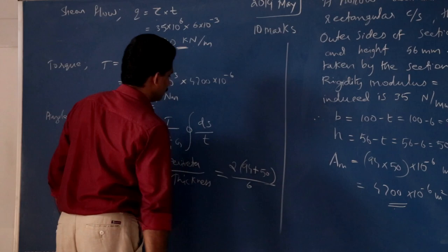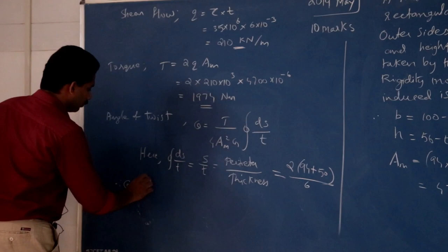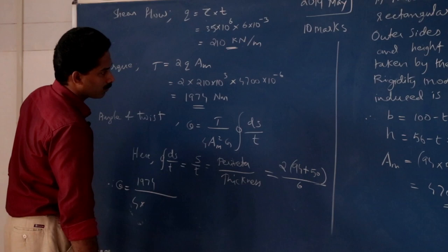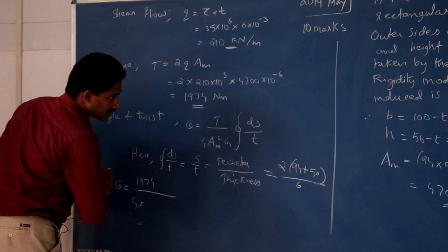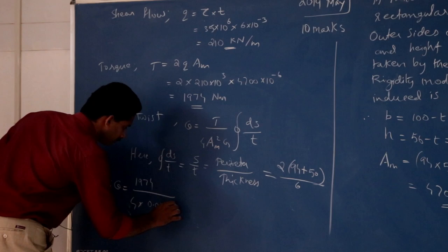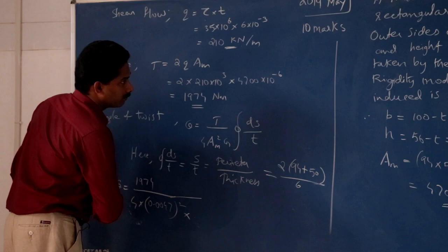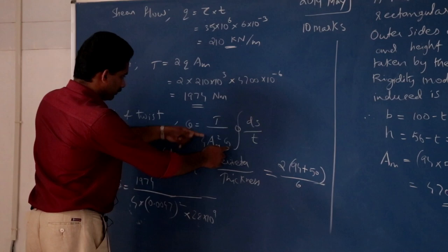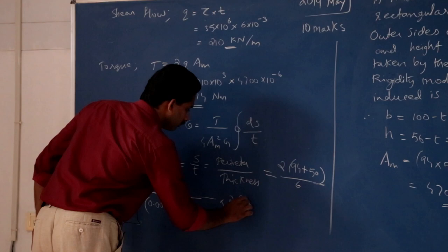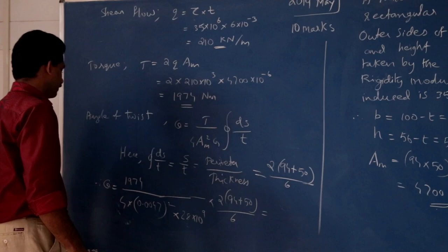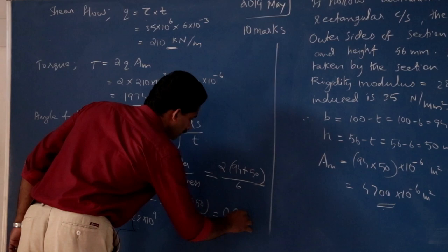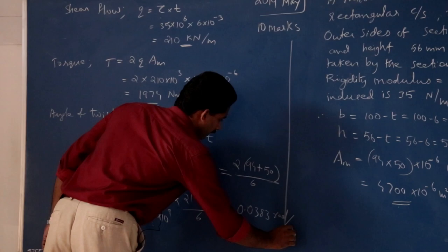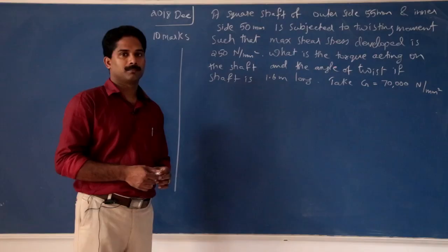Thickness t is 6. Therefore, angle of twist theta equals 1974 divided by 4 into mean area squared — 4700 into 10 raised to minus 6, that is 0.0047 — all squared, into G. The rigidity modulus is 28 gigapascal, 28 into 10 raised to 9 N per meter squared. Integral ds by t: thickness value 2 into 94 plus 50 divided by 6. Carrying out the operation, you get 0.0383 radians per meter. So that is the angle of twist for unit length.